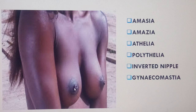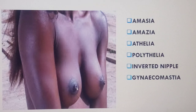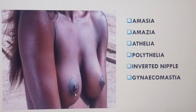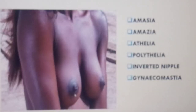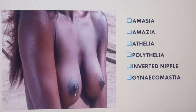Some people don't have a nipple at all, and that is what you call athelia. Sometimes there can be multiple nipples, found along what you call the milk line. If you look at animals like the dog, you see it has many breasts to feed multiple offspring at a time.